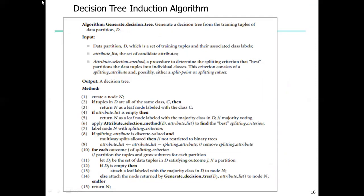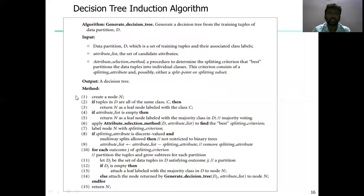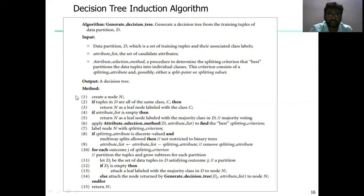The algorithm of the decision tree generates from the training data partition D. The inputs taken from data partition D are: the set of training tuples and their associated class labels; the attribute list, which is the set of candidate attributes; and the attribute selection method — the procedure to determine the splitting criteria that best partitions the data tuples into individual classes, consisting of a splitting attribute and possibly a splitting point or splitting subset. The resultant output is the decision tree.